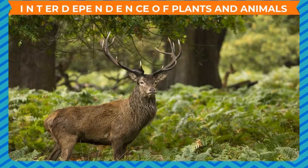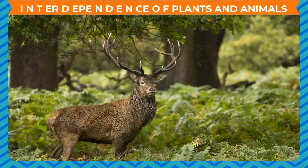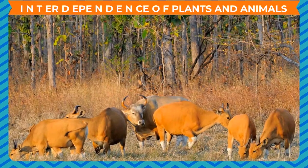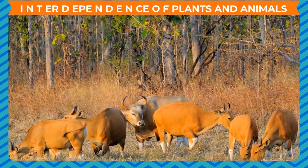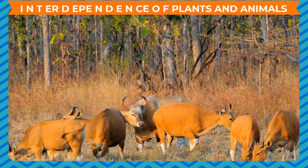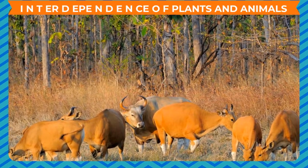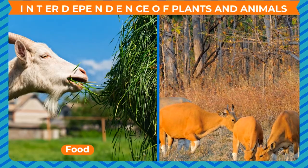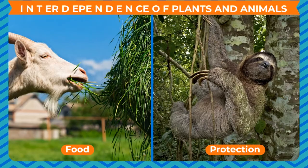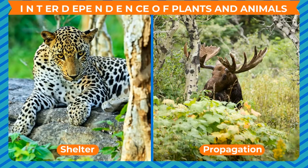Interdependence of plants and animals: Plants and animals depend on each other for basic survival needs like food, protection, shelter and propagation. They are interconnected and interdependent.